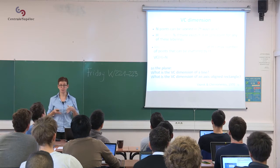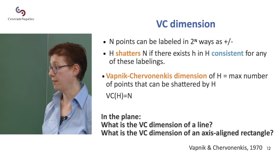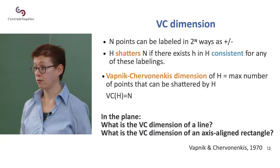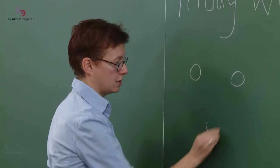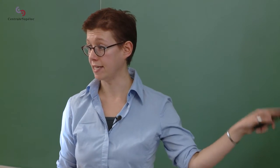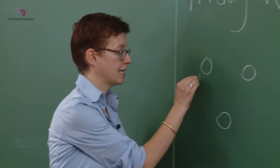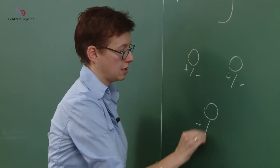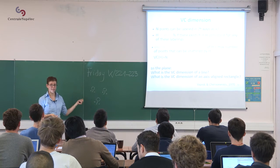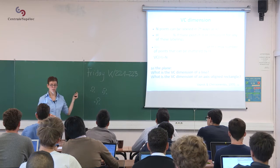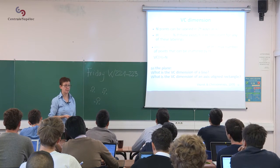We say that H — the hypothesis space — shatters n points if there exists a hypothesis h in our hypothesis space that is consistent for any of these labelings. So I take those points as my training set, with n equals three. I have two to the three ways of labeling them positive or negative, and whichever way I label them, I want to be able to separate them using a hypothesis from this hypothesis space.